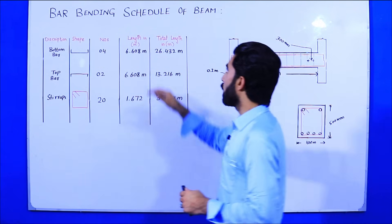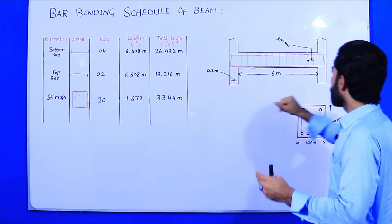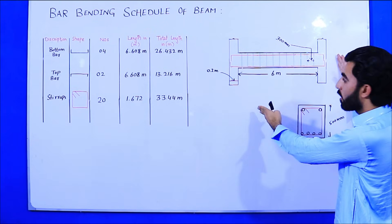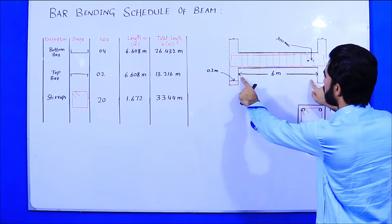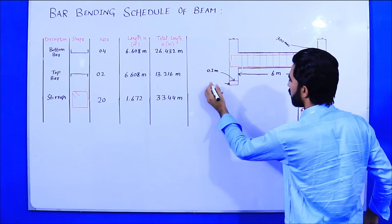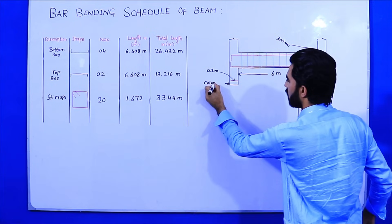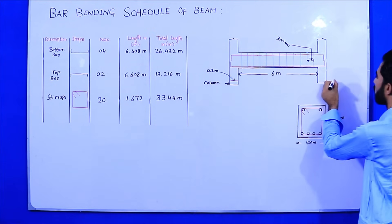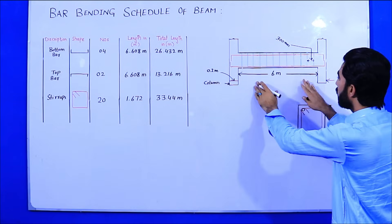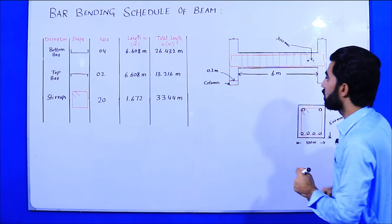The topic is bar bending schedule of beam. This is the beam which has a length of 6 meters, and these two are columns — one column on each side. This is a simply supported beam. The clear length of the beam is 6 meters.